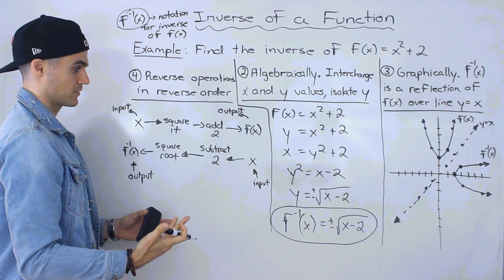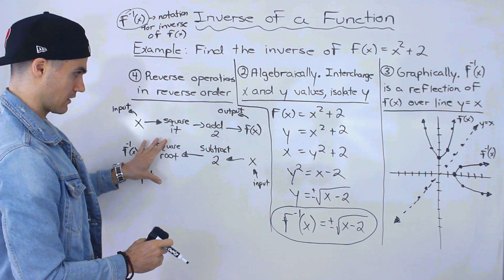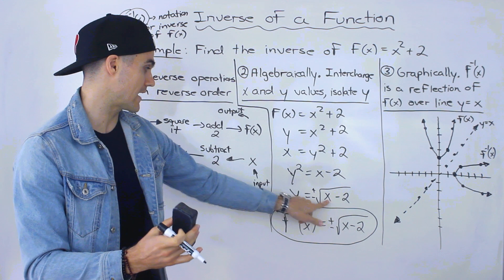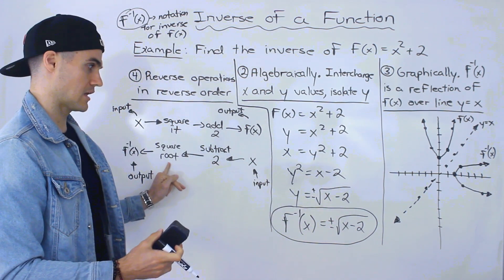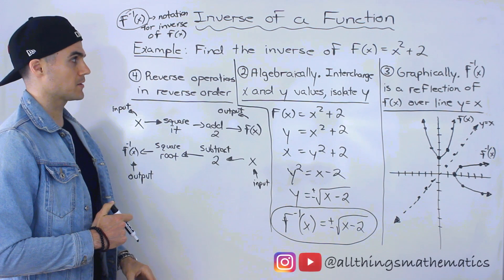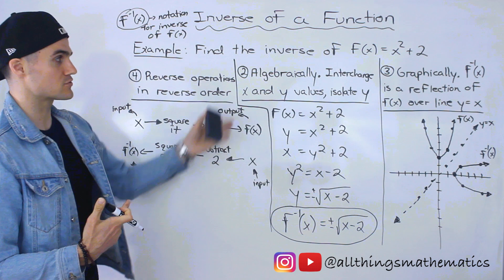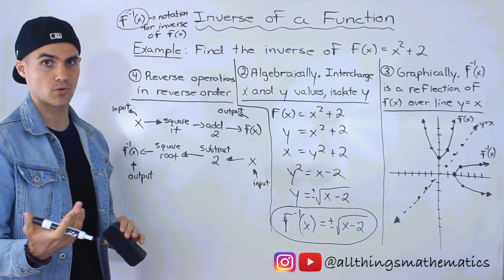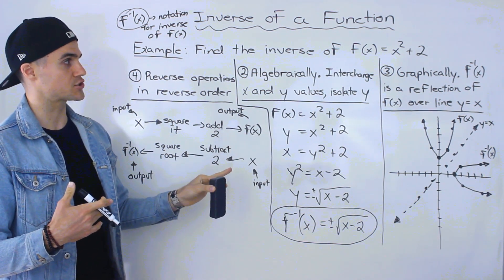Notice how this corresponds to what we found algebraically. Taking an input x, following order of operations, we subtract two before we square root it — so we subtract two, take the square root, and end up with our output for the inverse. That's pretty much it for finding the inverse: four different ways — table of values, algebraically, graphically, or reversing the operations in reverse order.